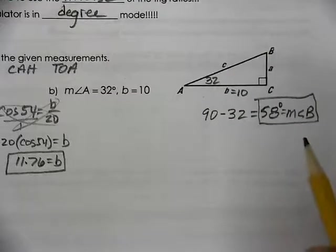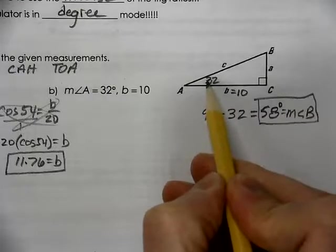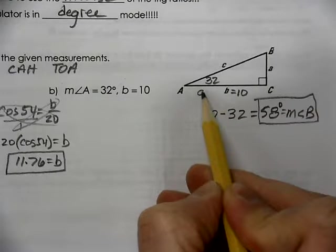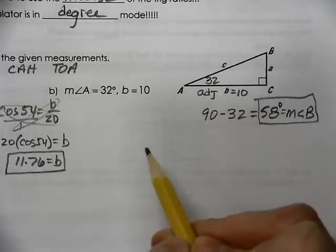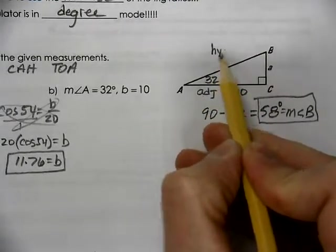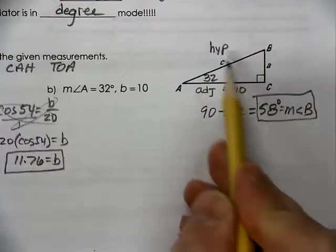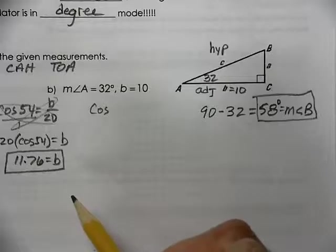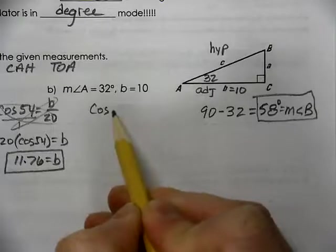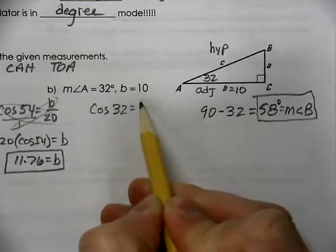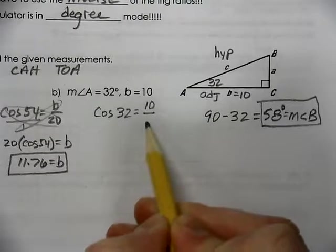Now, if we want to find out the hypotenuse, B, the length of 10, is next to, so it's the adjacent. And of course, across from the 90 degrees is the hypotenuse. So adjacent over hypotenuse is cosine. So cosine of 32 degrees equals the adjacent over the hypotenuse.